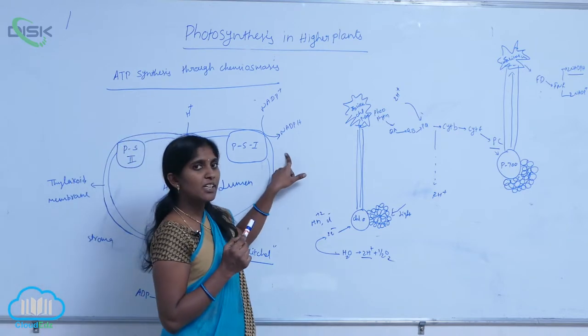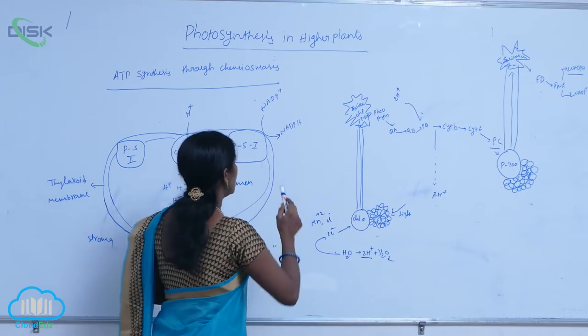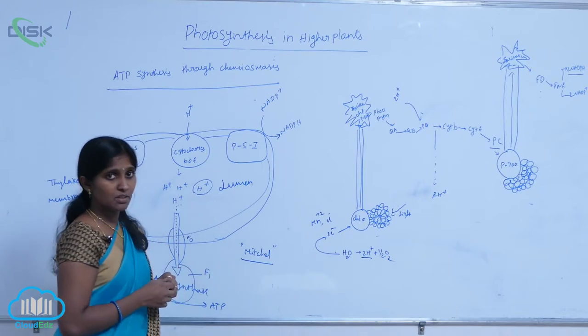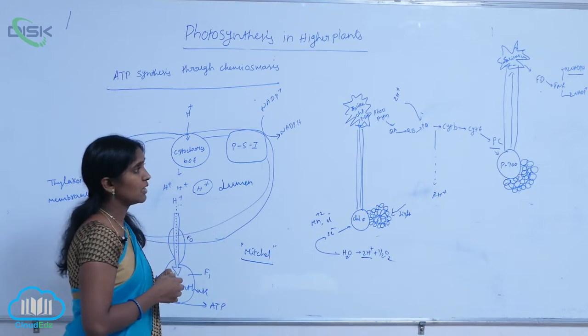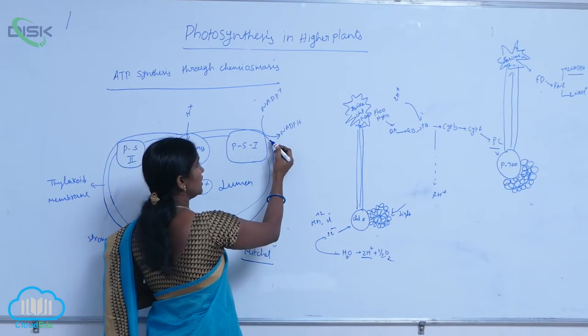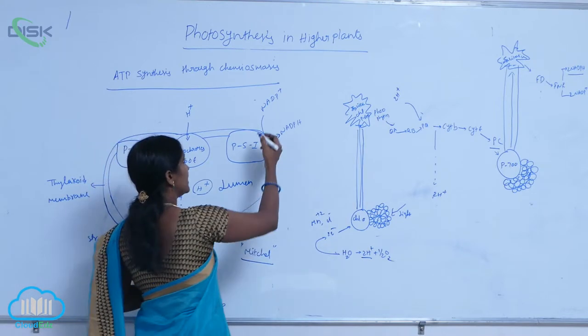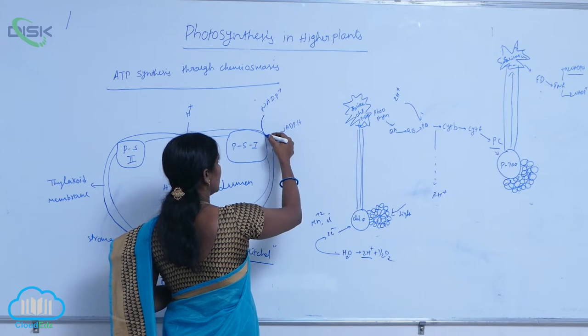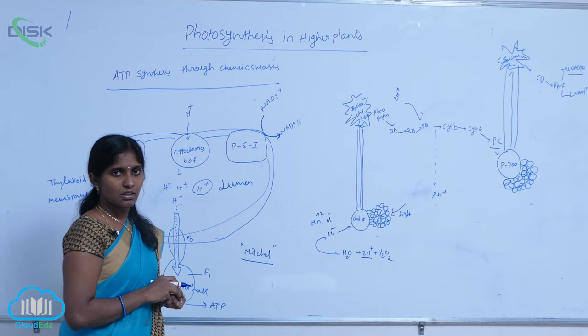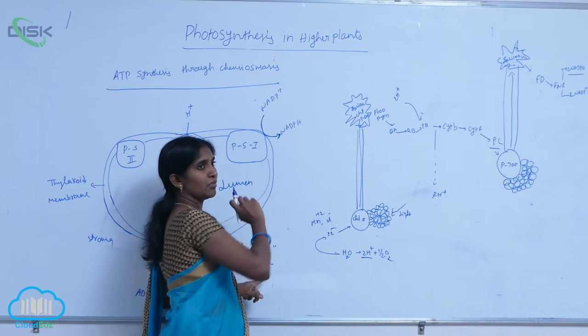Here we see utilization of protons present in the stroma. During non-cyclic photophosphorylation, PS2 is positioned very near the thylakoid membrane. At the surface of the thylakoid membrane towards the stroma, NADPH is released. This means NADPH is reduced by taking protons from the stroma.